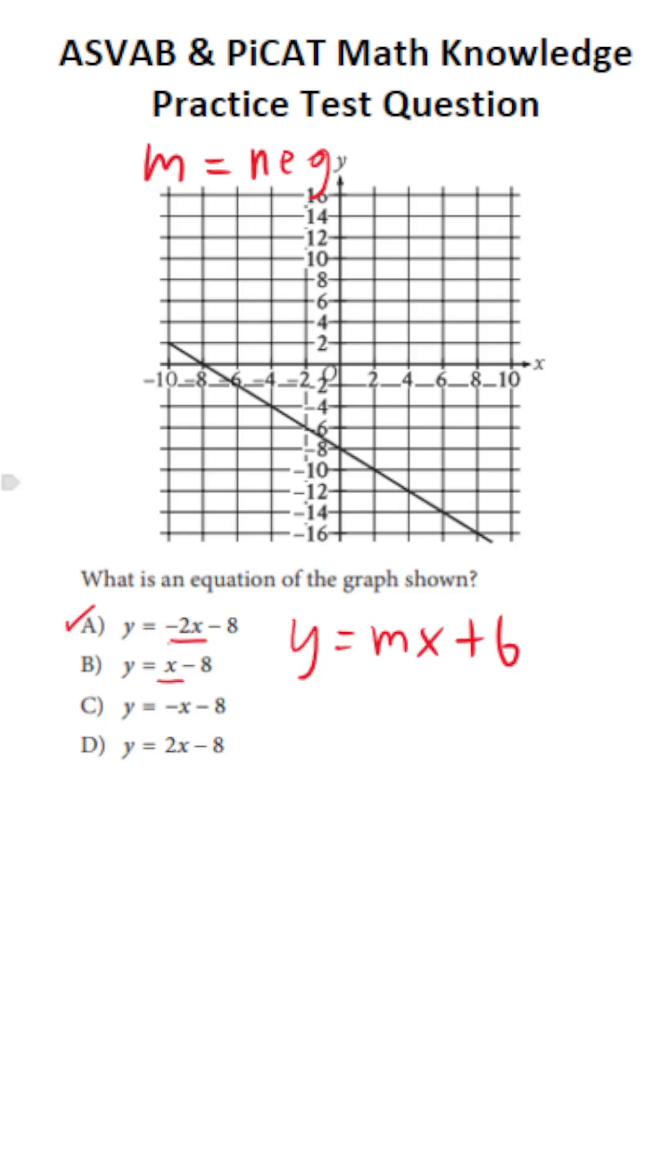The slope in B is x. That's positive 1. This cannot be an answer choice. We have a negative slope here. The slope in C is negative 1. You can see that there's a negative in front of the x. So this is a possible answer choice. And the slope in D is 2. That's positive. So this is not a possible answer choice.